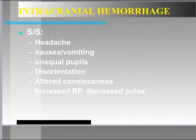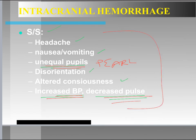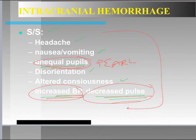Intracranial hemorrhage means bleeding within the brain itself. Signs and symptoms include headache, vomiting, disorientation, altered levels of consciousness, increased blood pressure, decreased pulse, and unequal pupils. The differentials — those that distinguish this from an MTBI — are the unequal pupils in your PERL assessment, increased blood pressure, and decreased pulse. If a patient presents with all these symptoms following a blow, particularly those three, it's a medical emergency indicating an intracranial bleed.